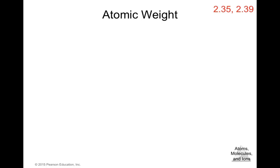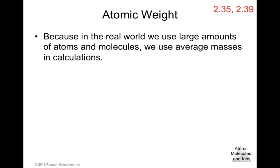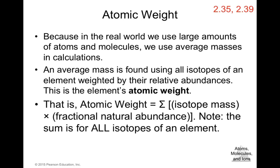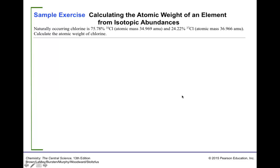The atomic weight is determined because in the real world we use large amounts of atoms and molecules, so we use average masses in calculations. An average mass is found using all isotopes of an element weighted by their relative abundance — this is the element's atomic weight. Specifically, atomic weight equals the sum of each isotope's mass multiplied by its fractional natural abundance, summed over all isotopes.